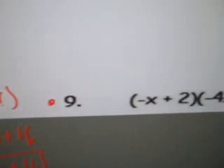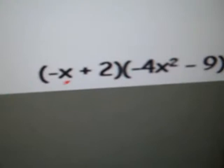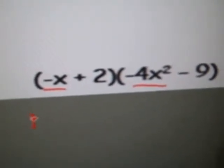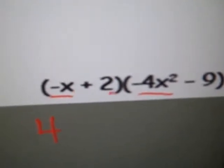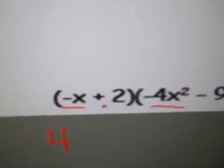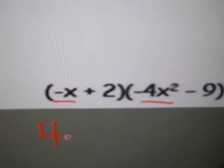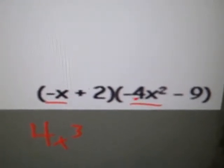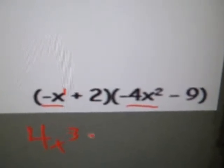Now with number 9. First, negative x, negative 4x squared. Now that is going to be a positive 4. Because negative times negative is a positive. And x times x squared is x cubed. Just follow exponent rules, add 1 and 2, and get 3.